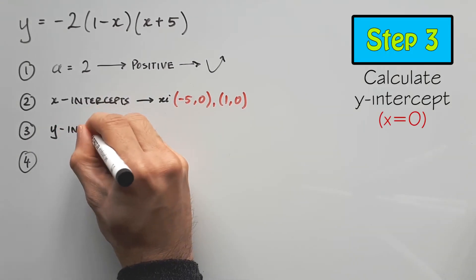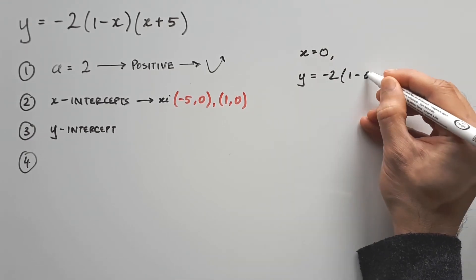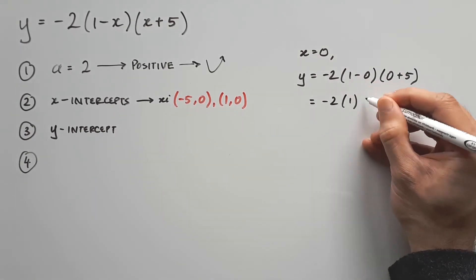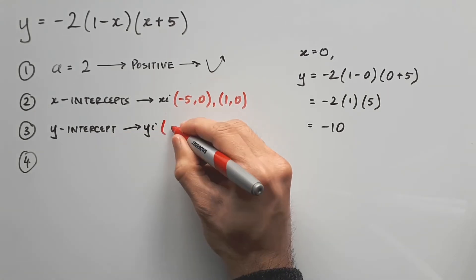Step 3: Calculate the y-intercept. You can do this by letting x equal 0. Substitute that into the equation, and y evaluates to negative 10. And that's our y-intercept: 0, negative 10.